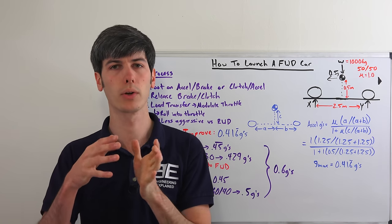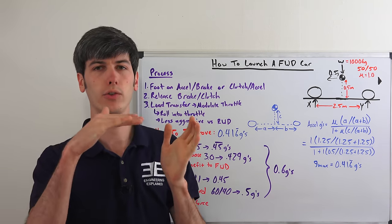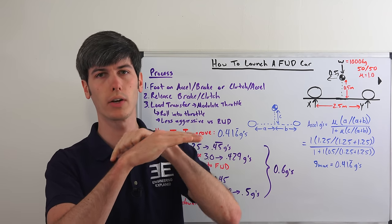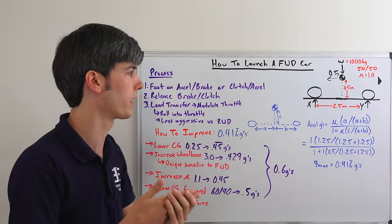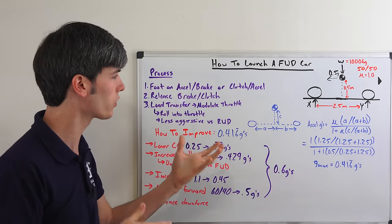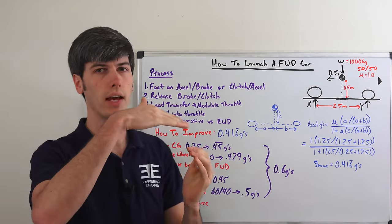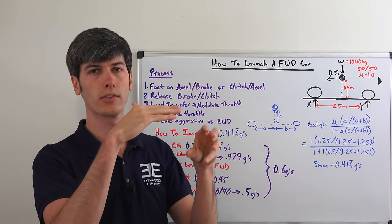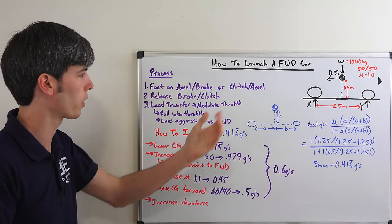So statically a front-wheel drive car could accelerate at half a G. However, as you start to accelerate you transfer load to the rear tire and you lose load on the front tire, which means you can no longer accelerate at that same rate. So this is kind of what makes it very simple to spin the tires on a front-wheel drive car, because as you transfer load to the rear you lessen the load on the front, and then it makes it easier for those to spin. So you have to be really careful with your throttle modulation.